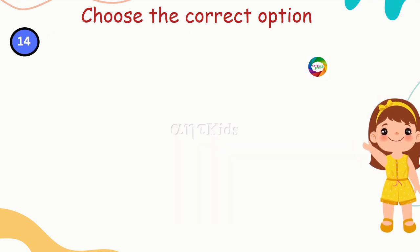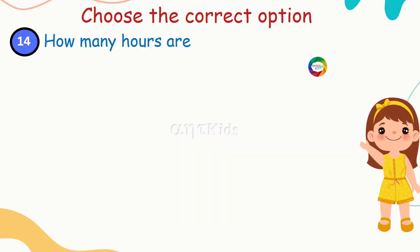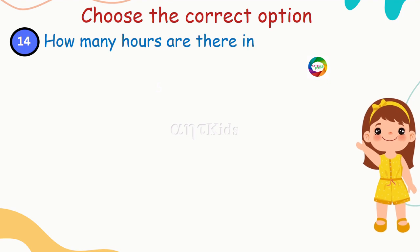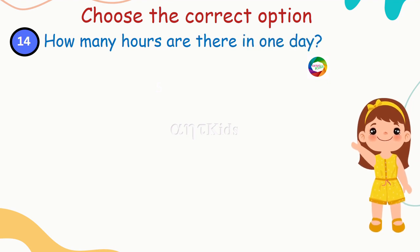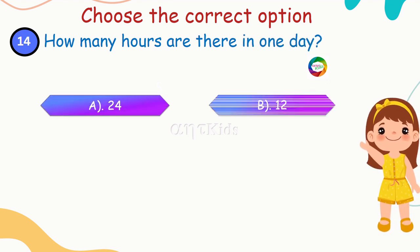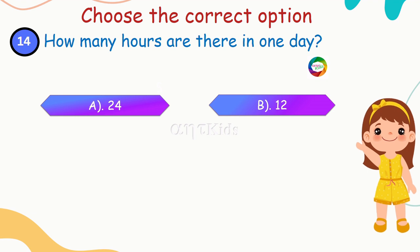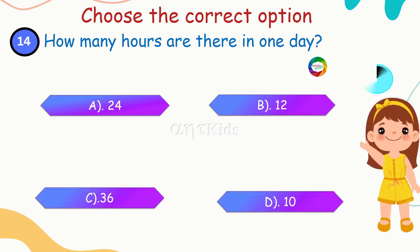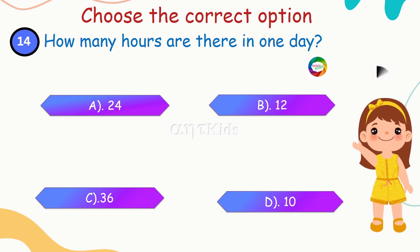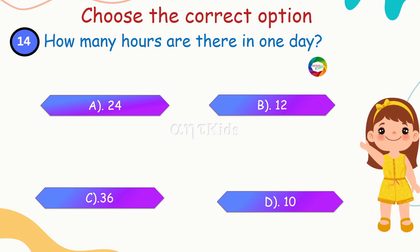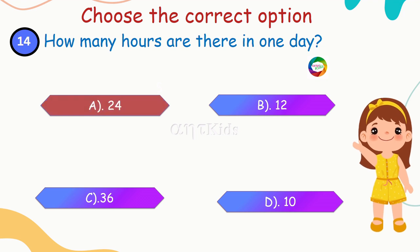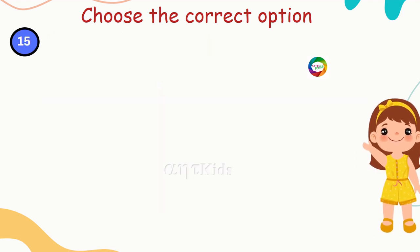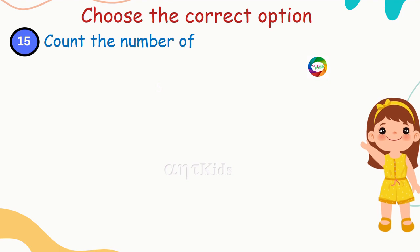Next question: how many hours are there in one day? Yes, you're right — 24 hours in one day.